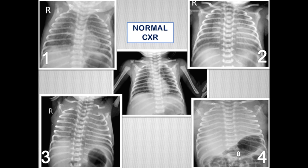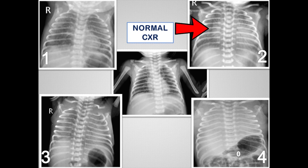Grading of RDS is important for clinical management. This slide shows all four grades of RDS; the film in the center is a normal chest X-ray. Grade 1 shows subtle ground glass appearance, minimal reticulonodular shadows, no significant hypoventilation, and diaphragmatic and cardiac margins are well seen. Grade 2 shows significant ground glass appearance but fairly ventilated lungs. Air bronchograms are seen in the region of the heart but not in the lateral aspect of the lungs, and cardiac and diaphragmatic margins are obscured.